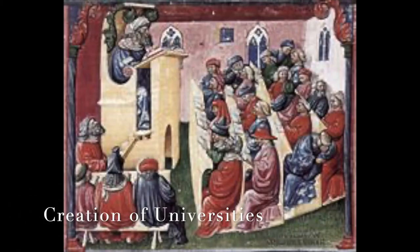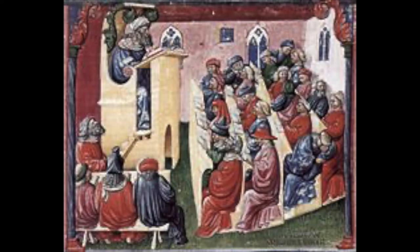One last major positive change during this time was the creation of universities. In the past, only members of the church were able to receive an education. Now, anyone could start to receive an education if they wanted to. There was a guild system in place that governed universities. The teachers were known as masters and had to be certified in order to teach. The masters were a master of a singular topic and would teach their students. Topics that were taught could range from logic to music.